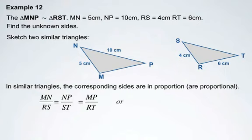Now we need to substitute in the values that we know. MN is 5 centimeters, so we've substituted that in. And side RS was given as 4 centimeters.